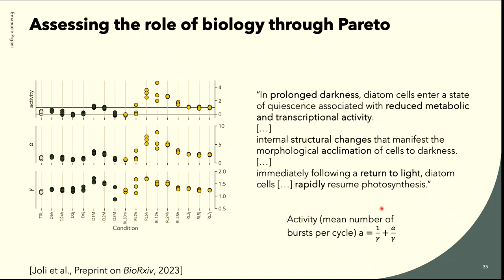For instance, we looked at one experiment in which a species of diatom was stressed by three months of prolonged darkness. What they found was that diatom cells, after some days, show a reduction in metabolic and transcription activity. And this is something we also observe when we look at the activity as measured by the Pareto exponent — so you can have a biological interpretation.